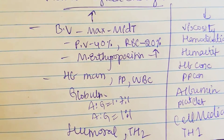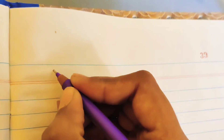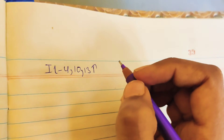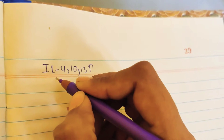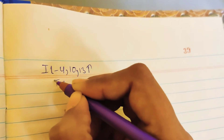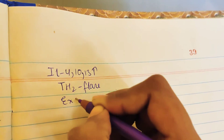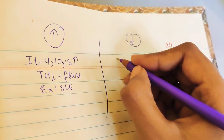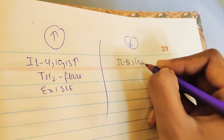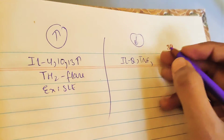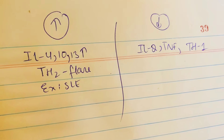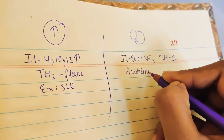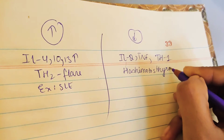Interleukins 4, 10, and 13 will increase. Diseases related to TH2 will flare during pregnancy — for example SLE. Interleukin-2 and tumor necrosis factor will decrease. Diseases mediated by TH1 will improve in pregnancy, such as Hashimoto's thyroiditis.